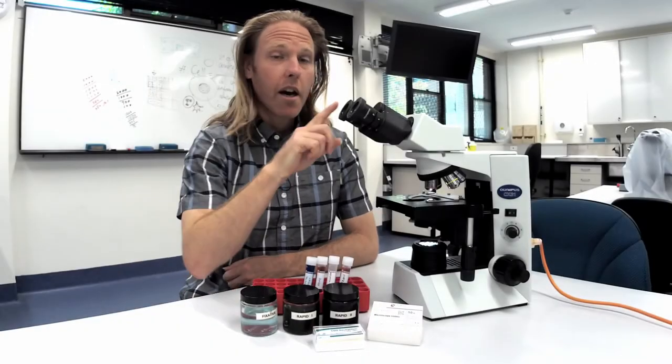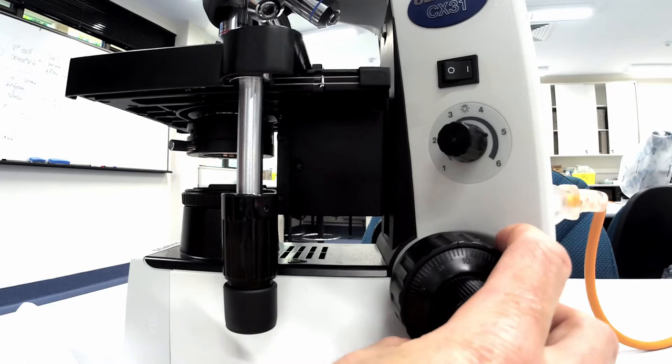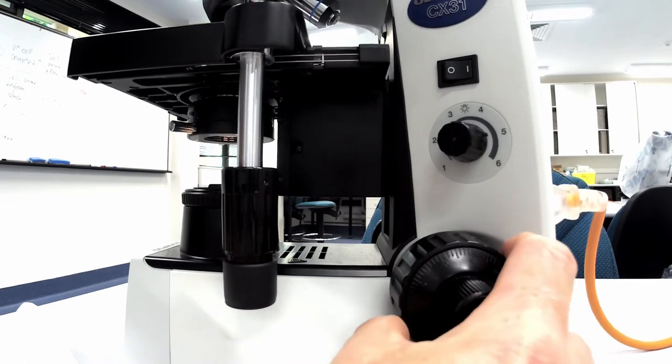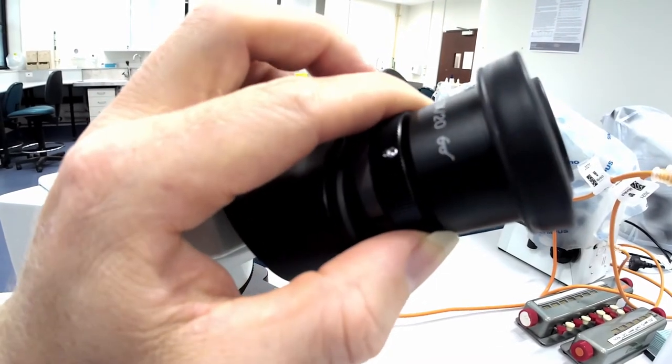Adjust the eyepieces next. One will have a ridged adjustable ring and the other will be plain. Use the coarse focus knob to bring the stage into focus looking down the non-adjustable eyepiece and then adjust the focus in the other eyepiece by turning the ridged ring.